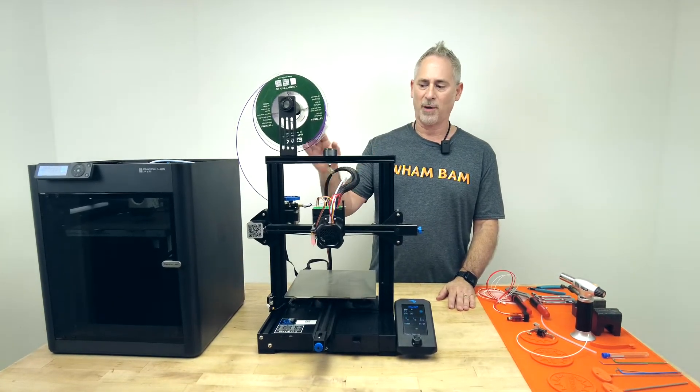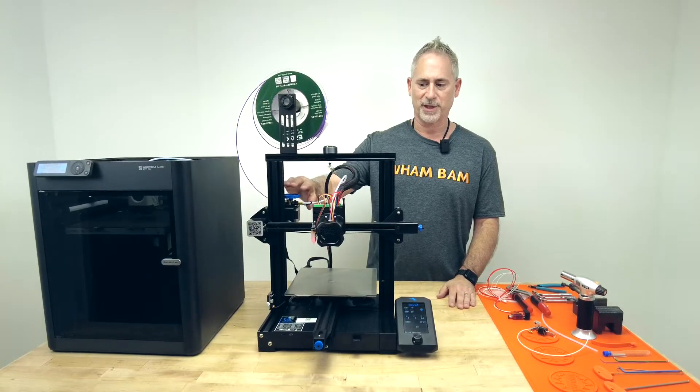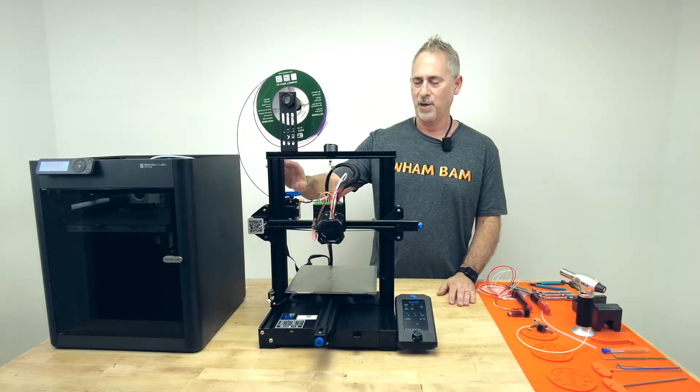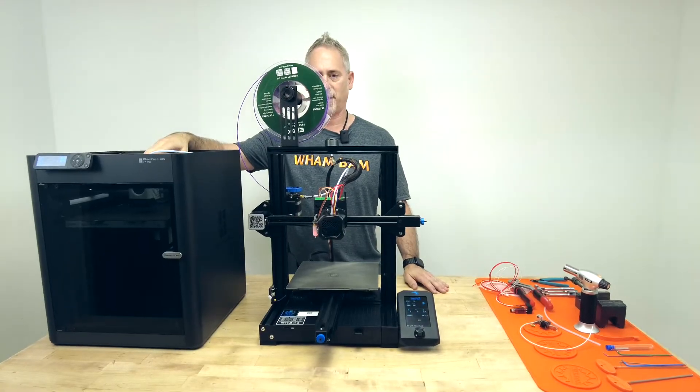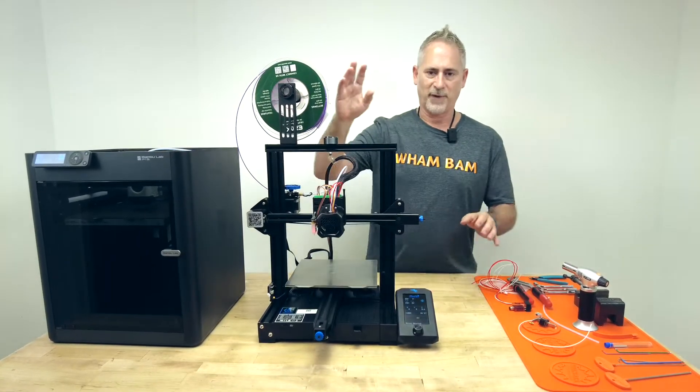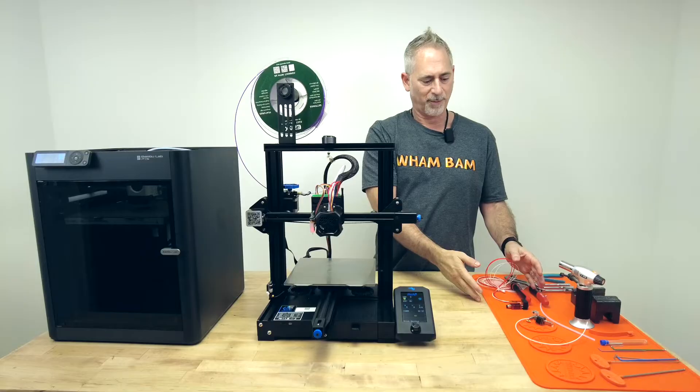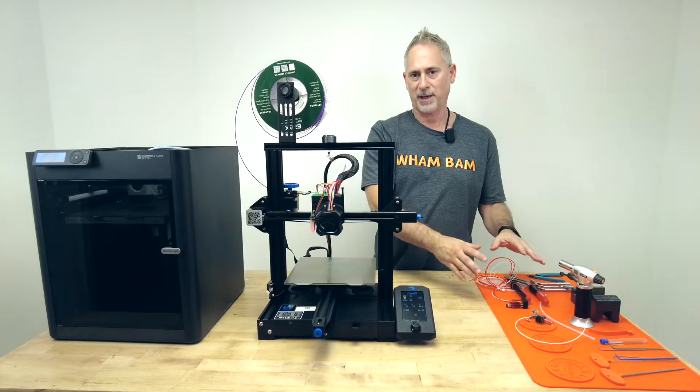We'll be talking about them on Bowden drives where your extruder is not attached to the hot end. We'll be talking about them on direct drives such as the Bamboo, and I'll also show you if you have to take the nozzle down onto the workbench, how we are going to maintain and clean it from there.